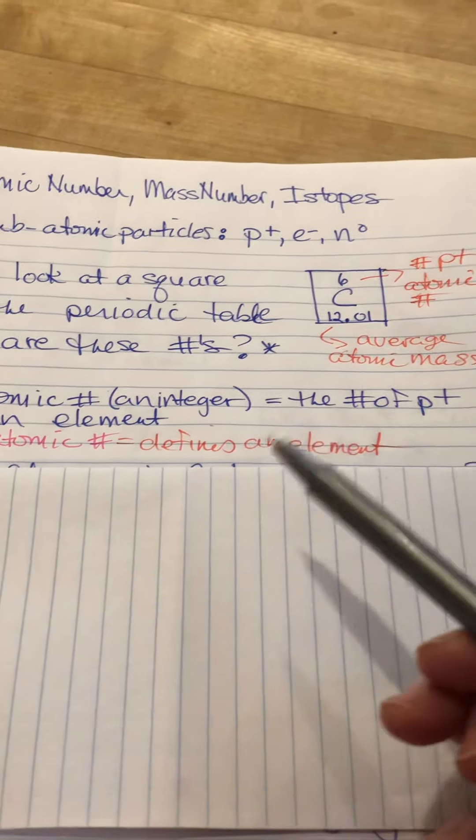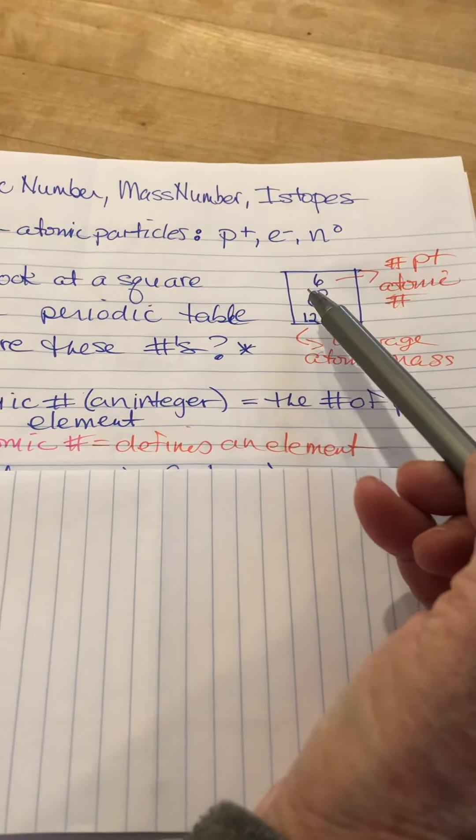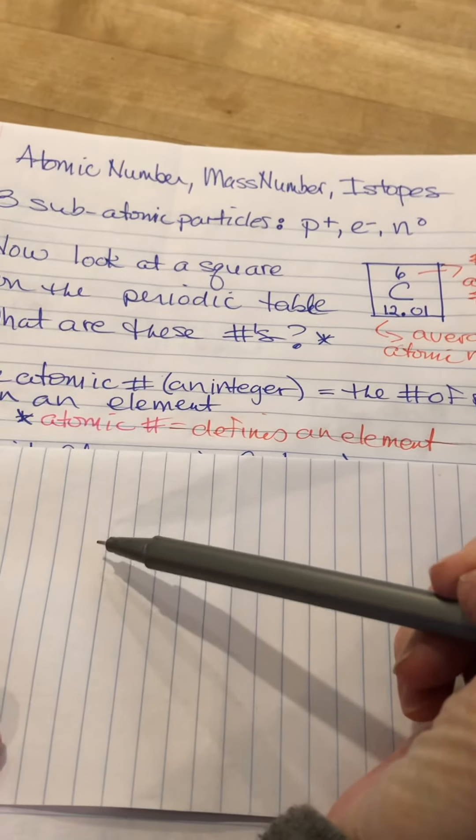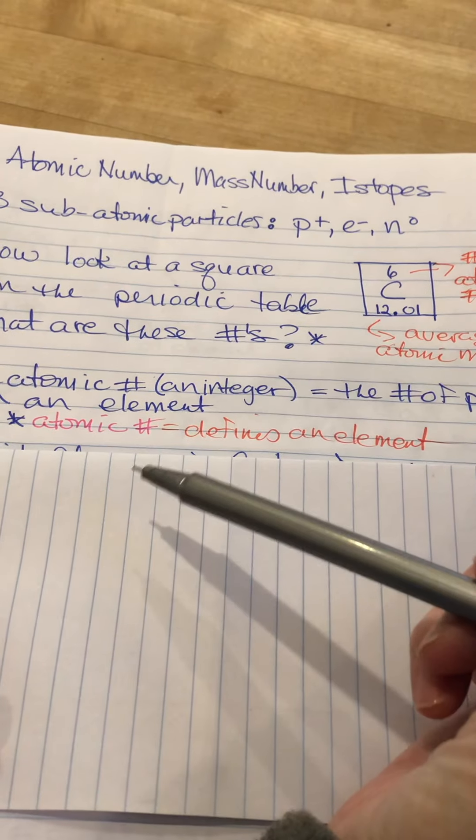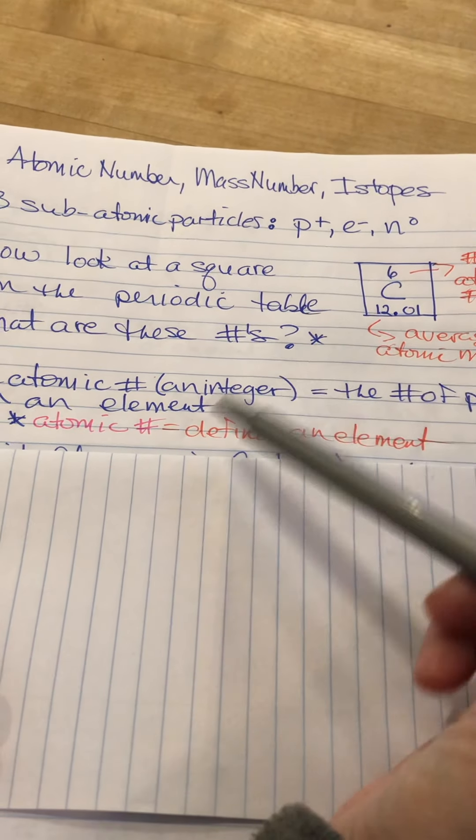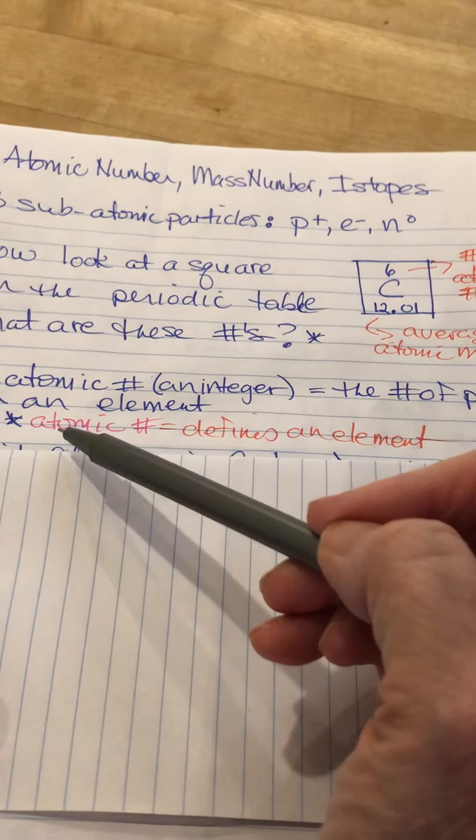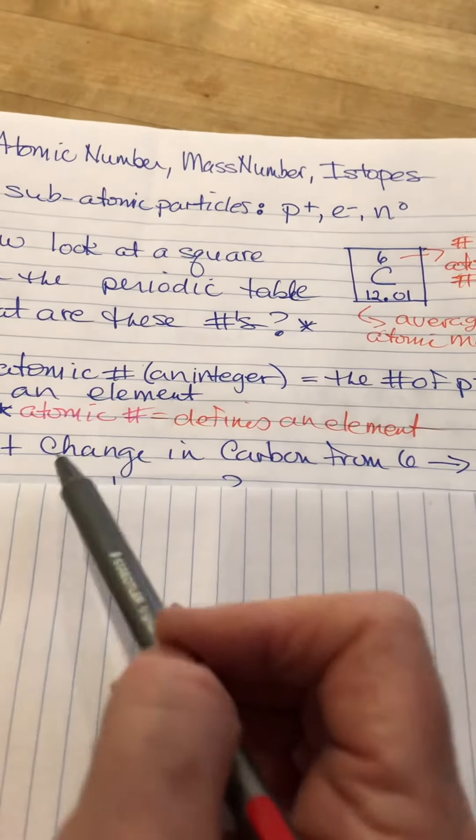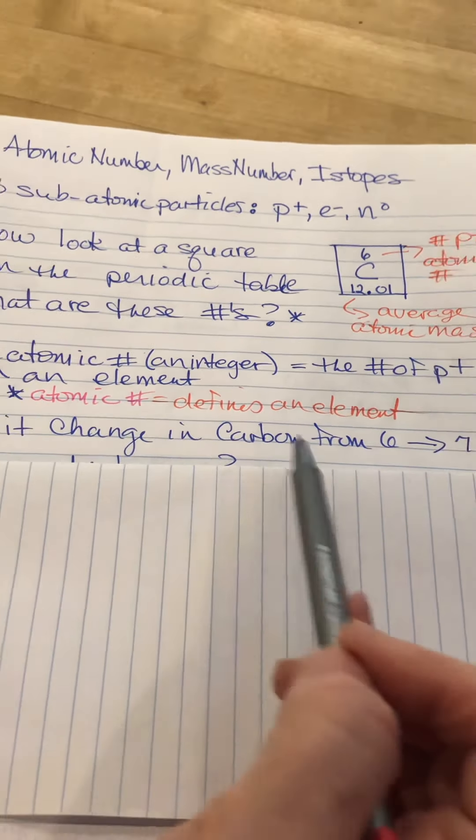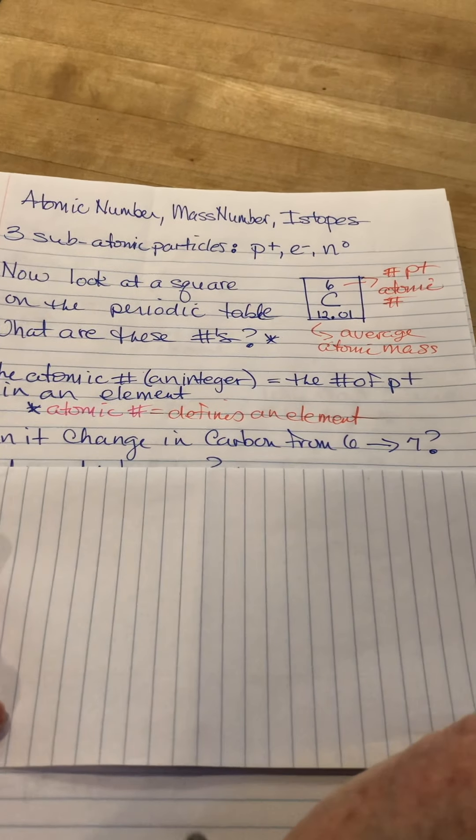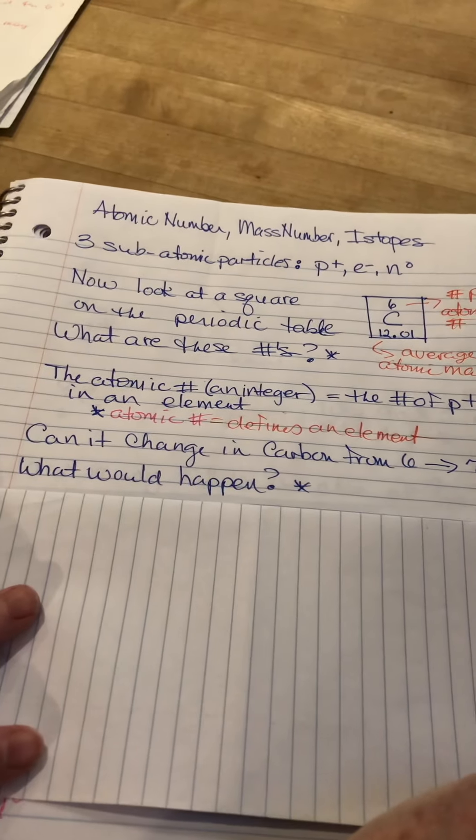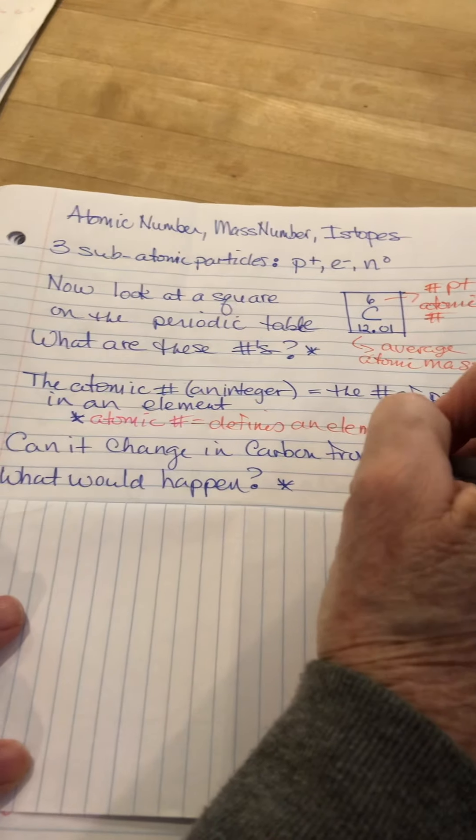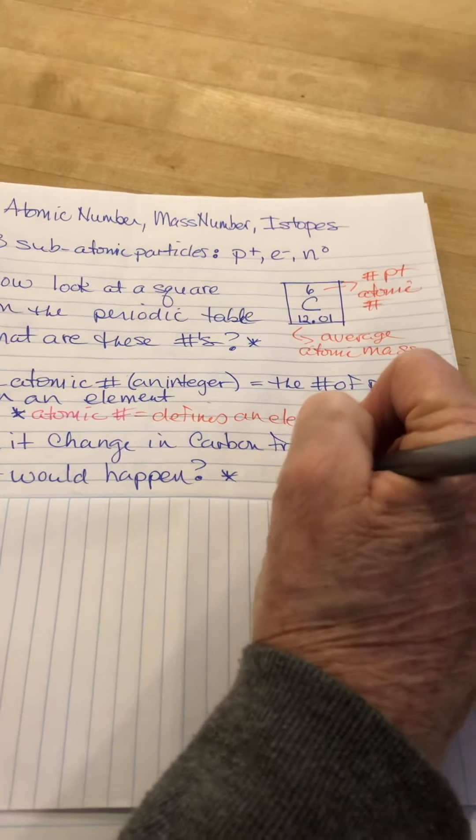If I tell you I have an element with an atomic number of six, I am talking about carbon. If I tell you you have an atomic number of eight, we're talking about oxygen. If you have a periodic table, you can connect the atomic number with the identity of the element. Can it change? Can carbon go from six to seven protons, an atomic number of six to seven? No, it can't.